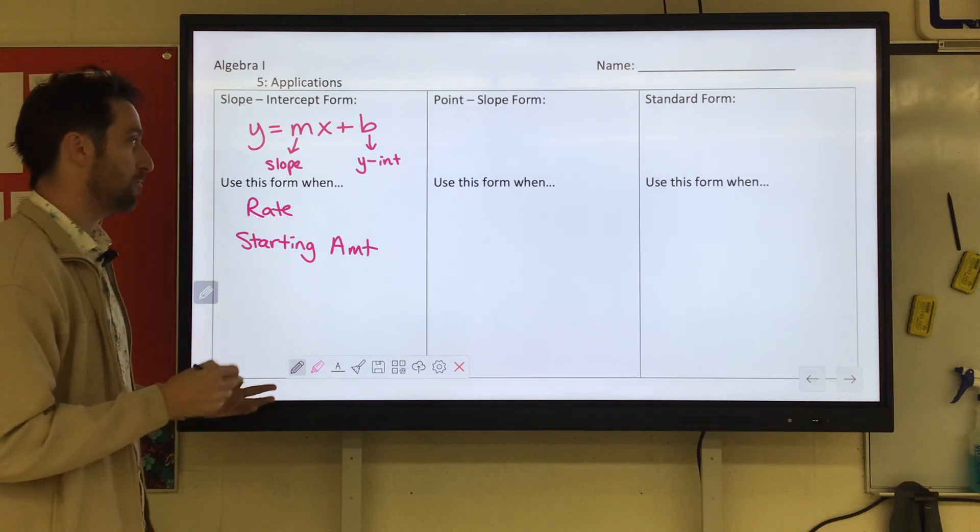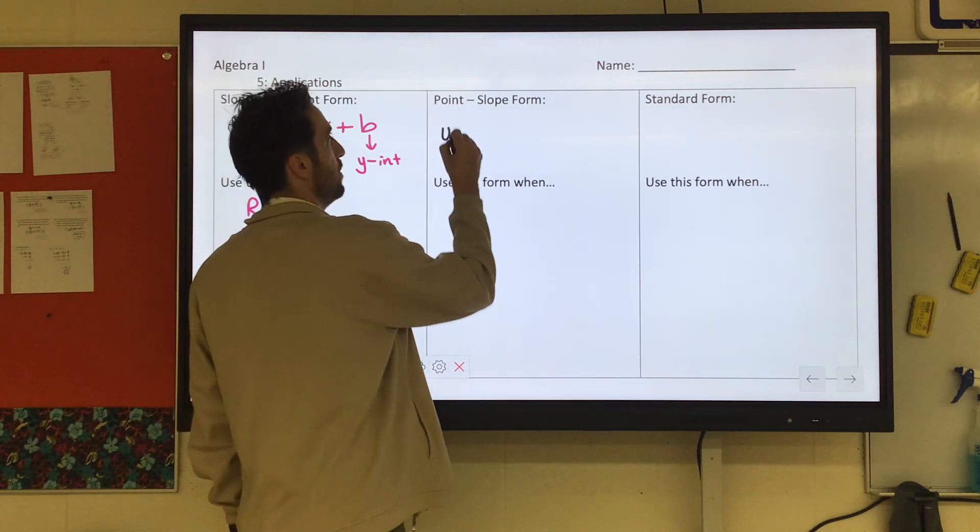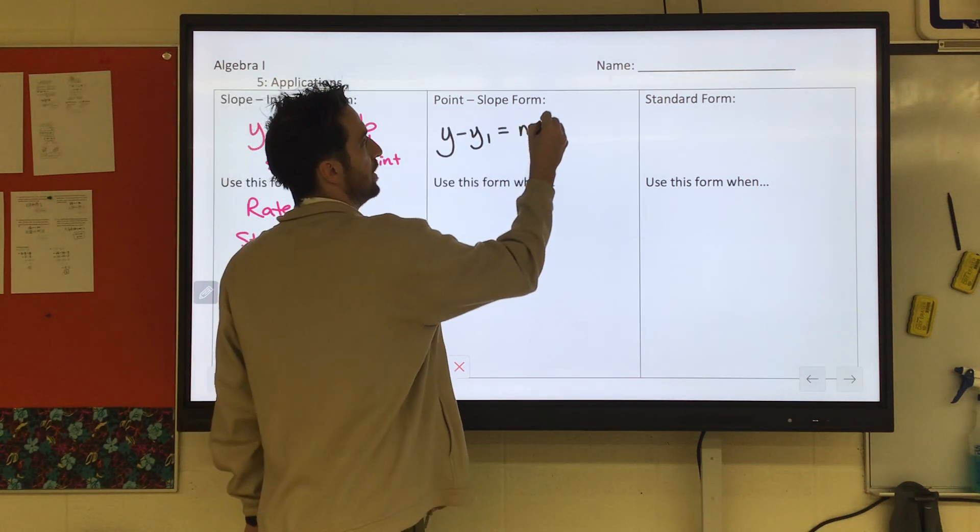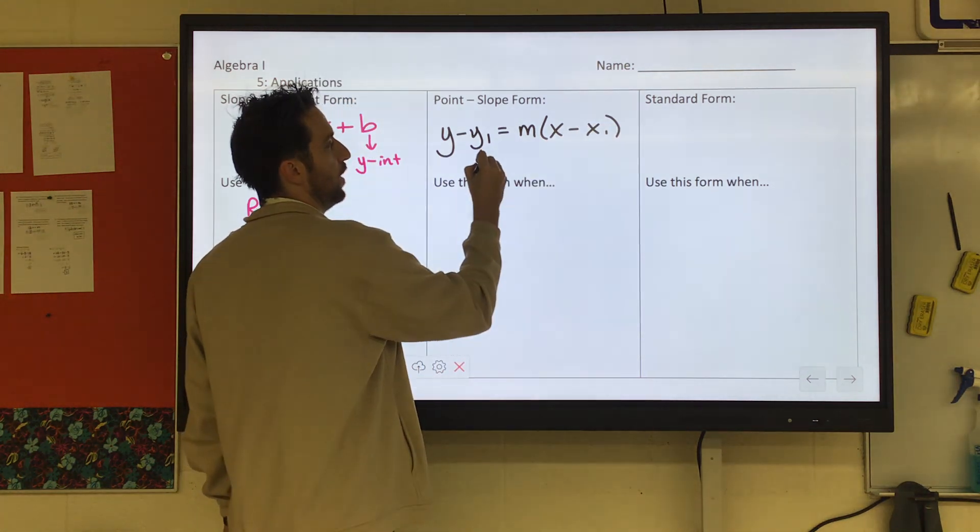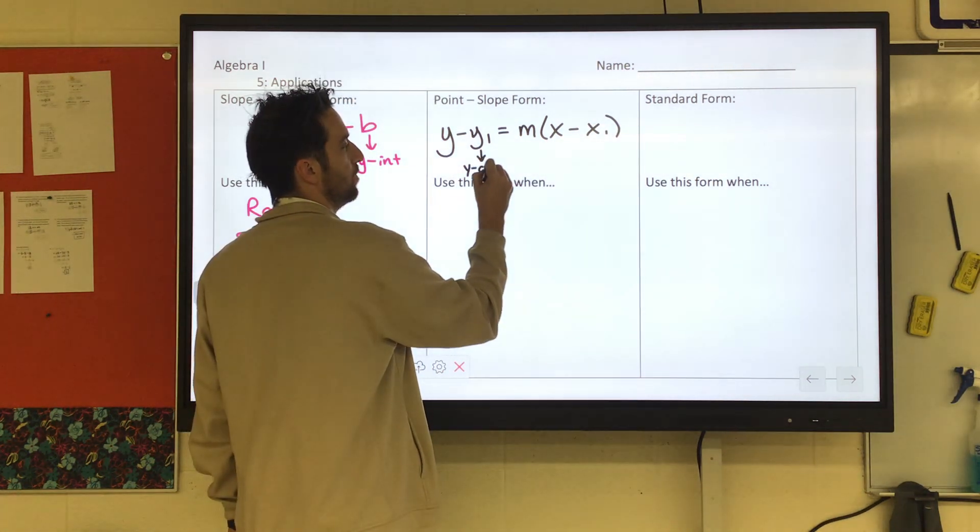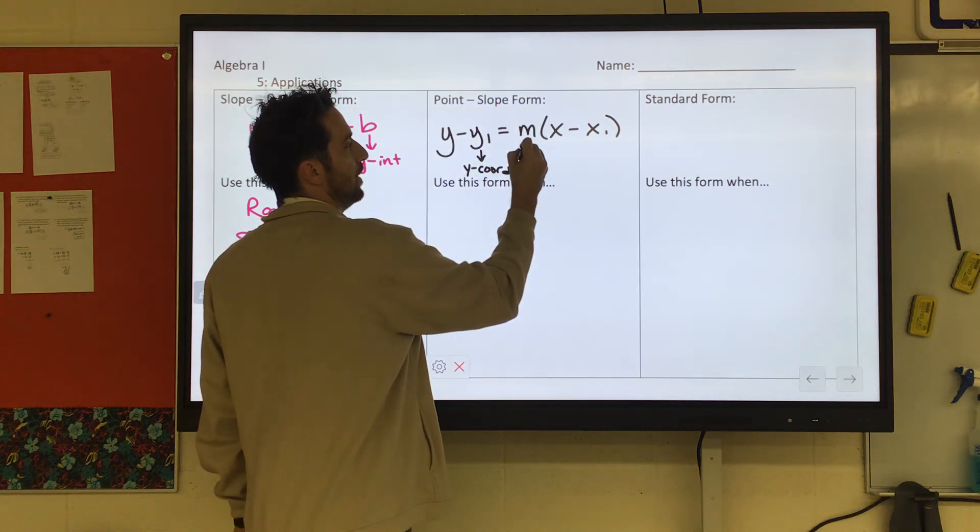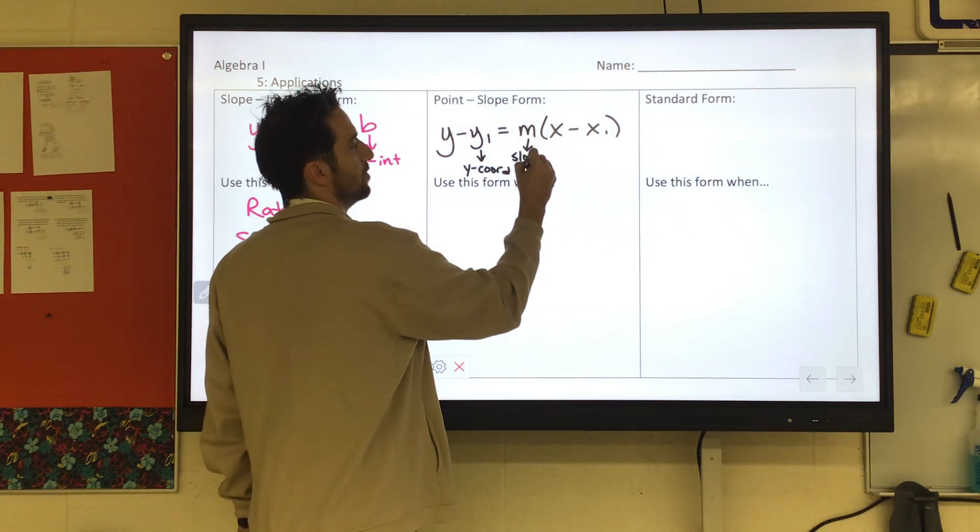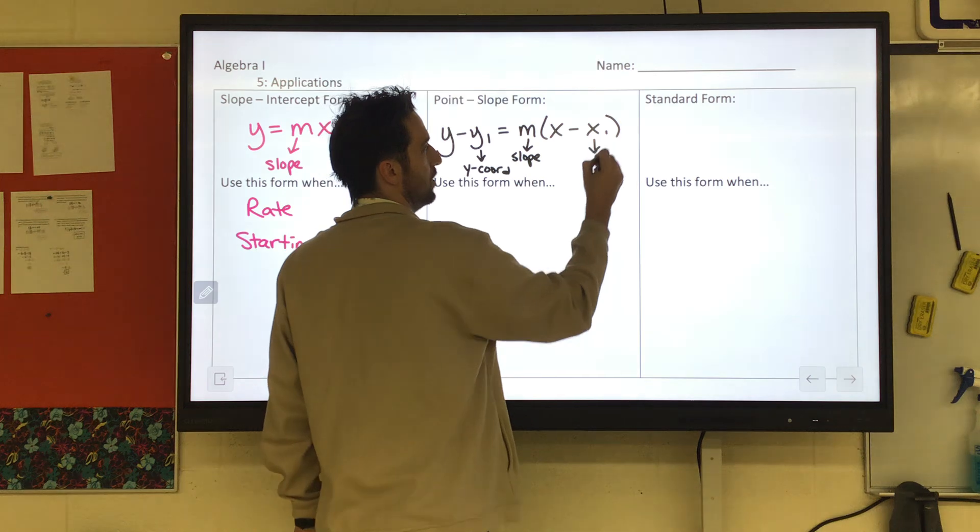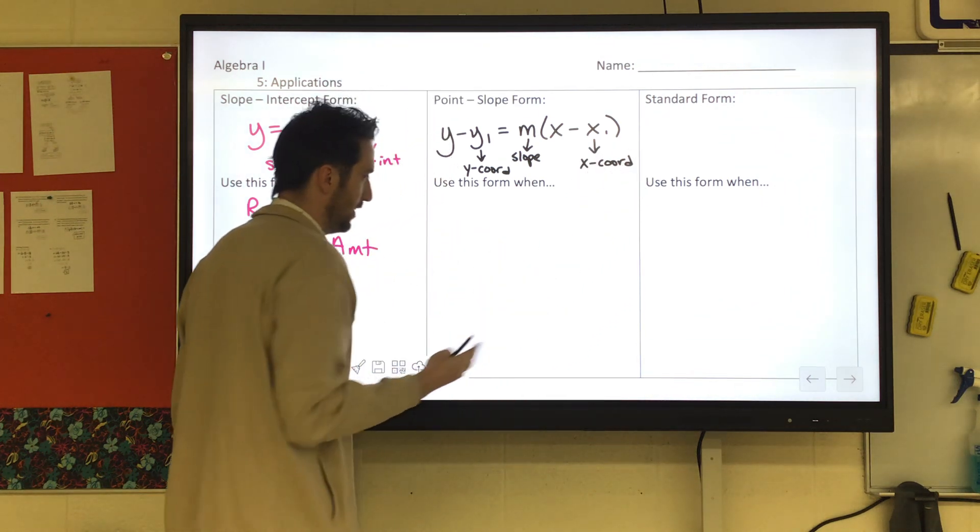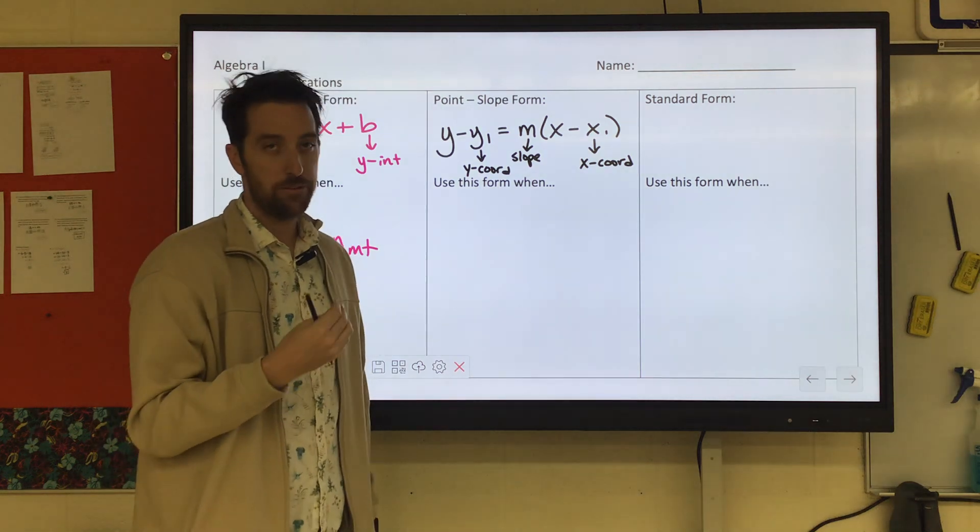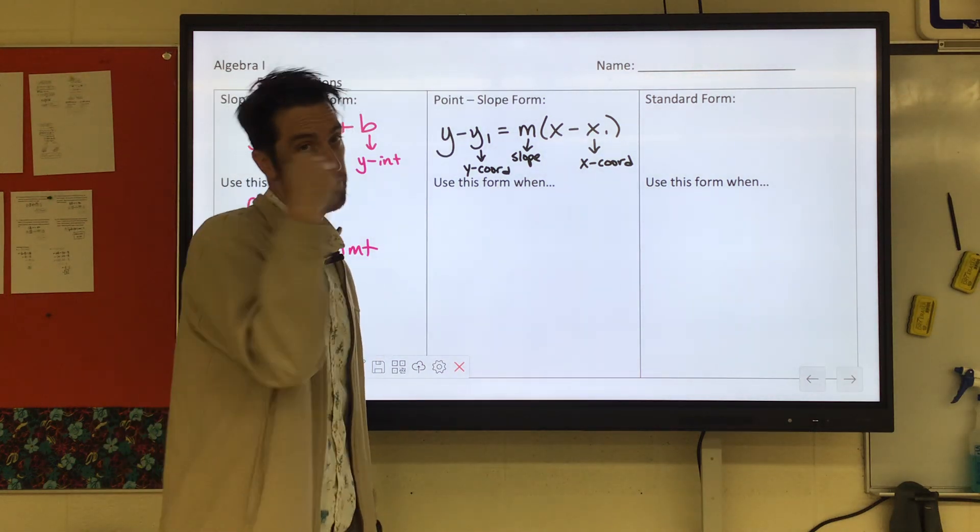Point-slope form is wild. It's y minus y1 equals m times x minus x1. So remember that y1 was your y-coordinate, m is your slope again, and then x is your x-coordinate. And again, it says it in the name. It's great when it gives you a point and a slope.